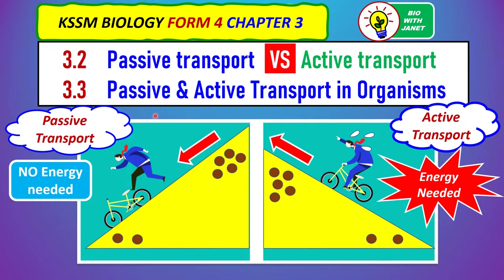Hi, everyone. Welcome back once again to my educational channel on biology. I'm teacher Janet and today we'll be discussing two subtopics from Form 4, Chapter 3. 3.2 Passive Transport versus Active Transport — what are the differences between these two types of movement of substances across the plasma membrane? The earlier part of 3.2 has been discussed in another video; this is the later part. Then 3.3 is a very short subtopic entitled Passive and Active Transport in Organisms.